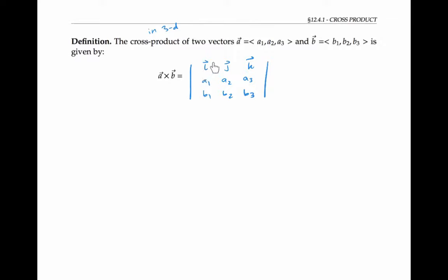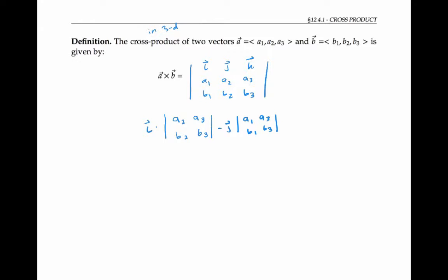We take the first entry i and multiply it by the determinant of the submatrix a2, a3, b2, b3, that we get by crossing out the row and column that i is in. Then we subtract the vector j times the determinant of the submatrix a1, a3, b1, b3, that we get by crossing out the row and column that j is in. Finally, we add the vector k times the determinant of the submatrix a1, a2, b1, b2, that we get by crossing out the row and column that k is in.